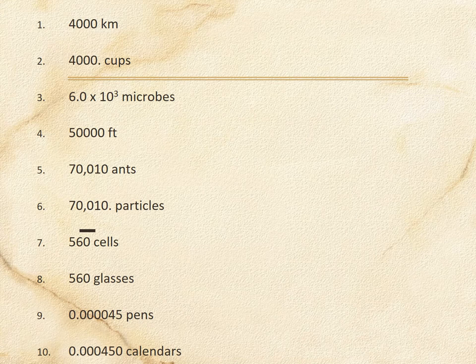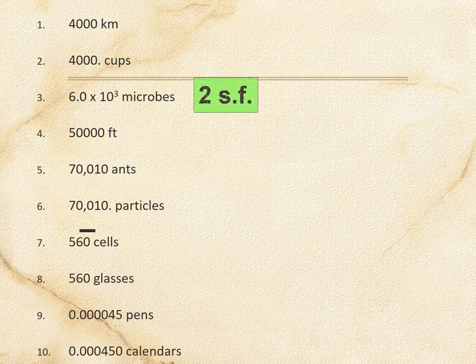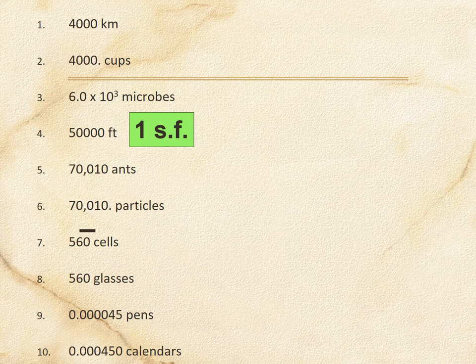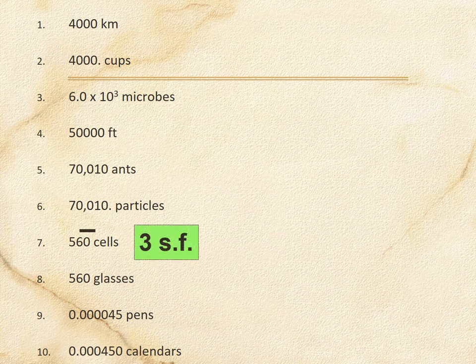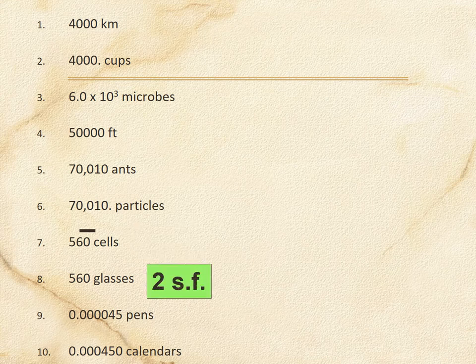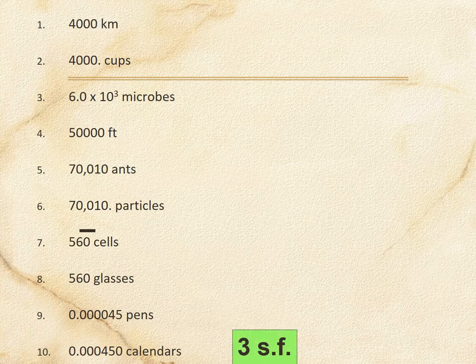Here's the tricky part with zeros. 1,000 without a decimal is one sig fig, but adding that decimal changes it to four. 6.0 is two sig figs. 5,000 without a decimal is only one. 70,010 with no decimal is four sig figs — the zeros in between are significant — but add a decimal and it changes to five. 560 with a line over the zero is three, without the line it's two. 0.000045 pens: the zeros in front of the 4 and 5 don't count, so it's two sig figs, but if we add a zero after the five, it changes to three.